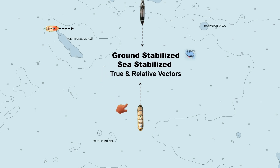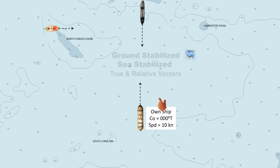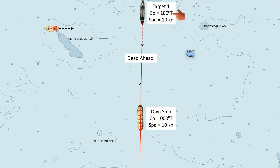The scenario is as follows: our ship is heading due north with an engine speed of 10 knots. Target 1 is a vessel with a relative bearing dead ahead, or almost dead ahead. Her course is due south, reciprocal to our course, and she is moving at the same speed, 10 knots. As we observe Target 1, we are in a head-on situation based on her aspect.